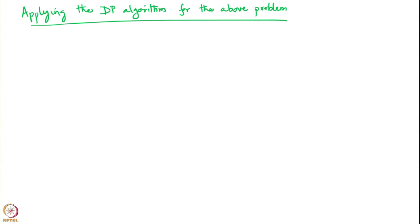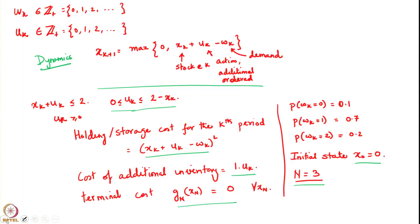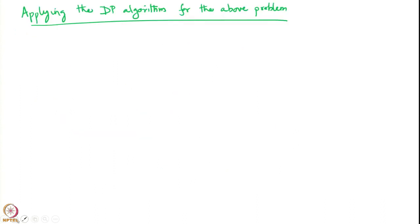Let us write out a generic step and also the terminal step. Since the terminal cost we assumed was equal to 0, g_N(x_N) was taken as 0. Since we are talking of time N equal to 3, for k equal to 3 we have that J3(x3) is equal to 0 for all values of x3.